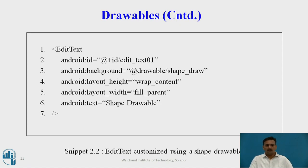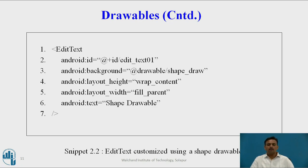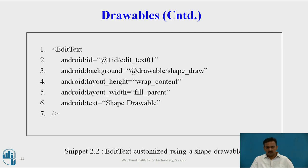You can see the EditText customized using Shape Drawables. Here you can see the particular height and width of the rectangle is specified, and whatever contents are there, they are wrapped. These are some parameters regarding the particular shape in the app for the rectangle, which are specified here.